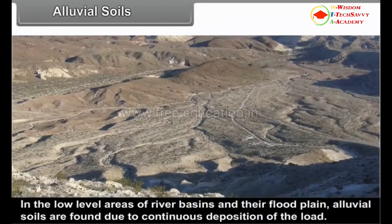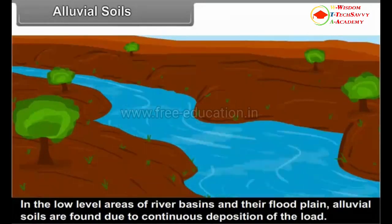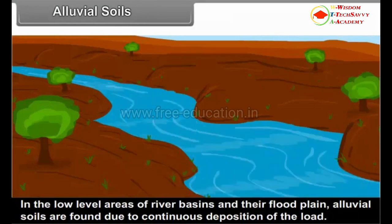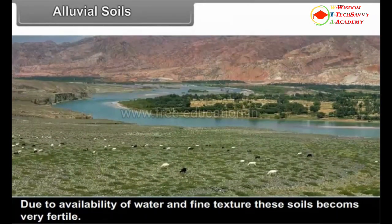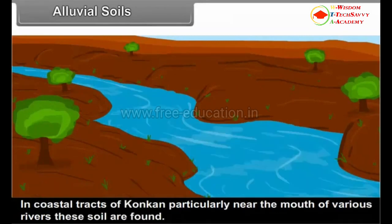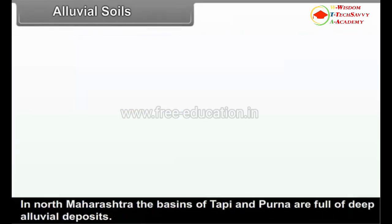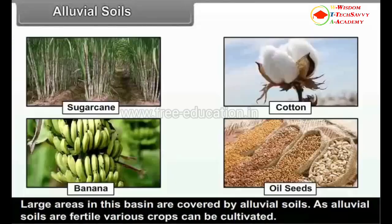Alluvial Soils. In the low-level areas of river basins and their flood plains, alluvial soils are found due to continuous deposition of load. Due to availability of water and fine texture, these soils become very fertile. In Maharashtra, these soils dominate the lower reaches of main rivers. In coastal tracts of Konkan, particularly near the mouth of various rivers, these soils are found. In North Maharashtra, the basins of Tapi and Purna are full of deep alluvial deposits. As alluvial soils are fertile, various crops can be cultivated.